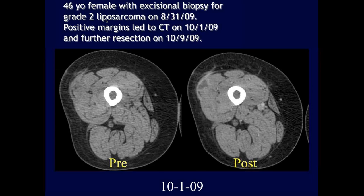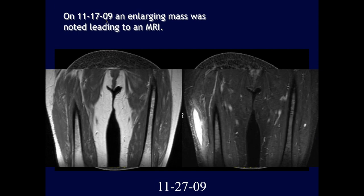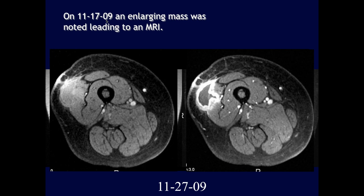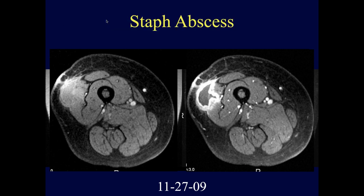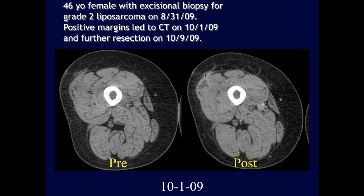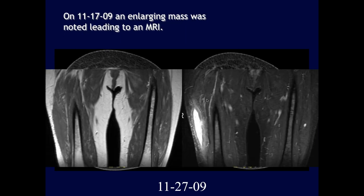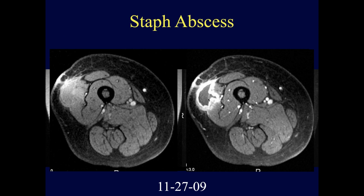On November CT, a month and a half after further resection, the collection has increased substantially in size with a nodular appearance consistent with an abscess. Given recent surgery, concern for an intramuscular abscess is appropriate. In retrospect, the earlier collection was also likely an abscess rather than recurrent tumor. Every time you operate on someone, post-surgical infection is the first thing to consider.